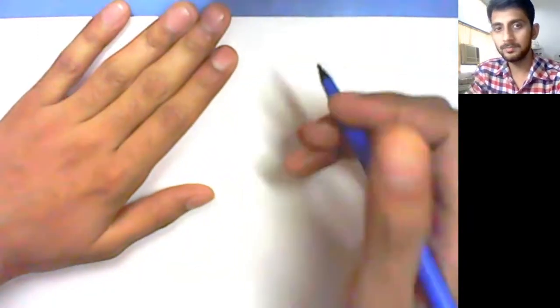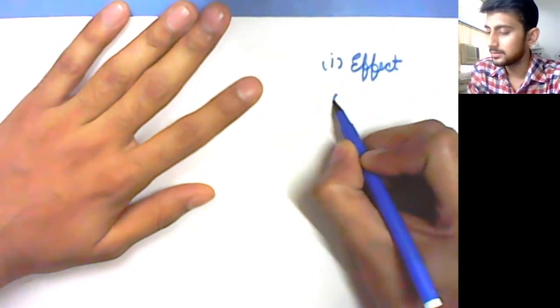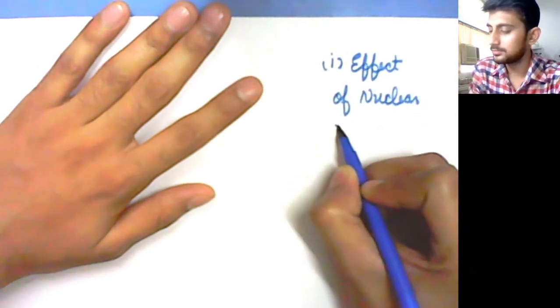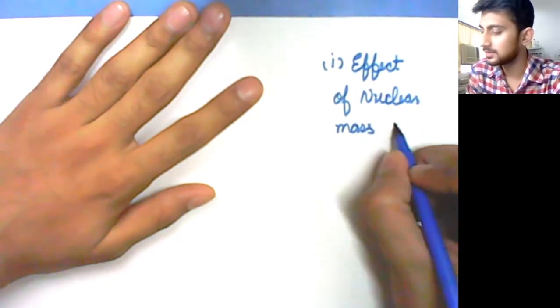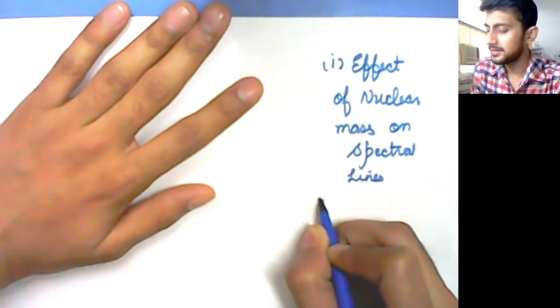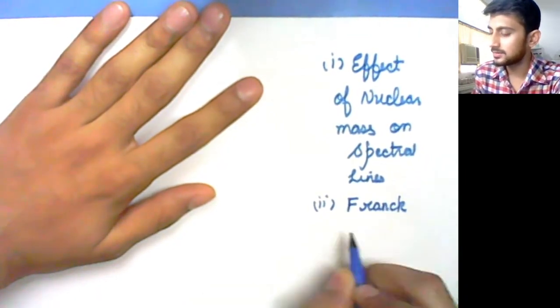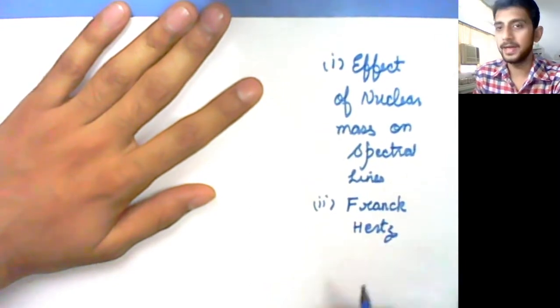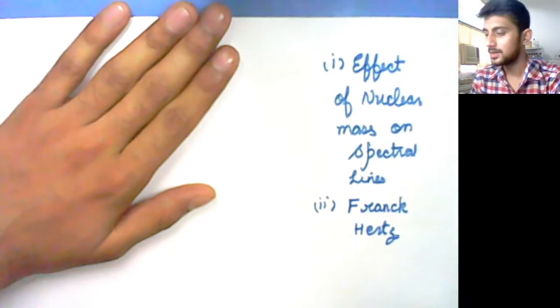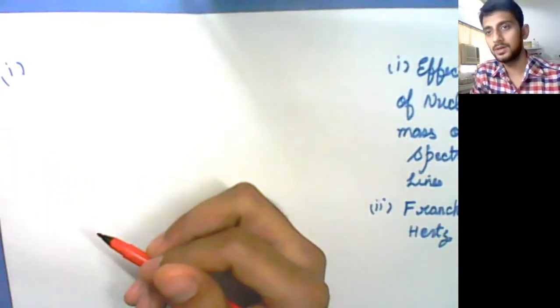A very good morning and welcome back. In order to finish our unit 3, we still have to complete a few topics. One is to understand the effect of nuclear mass on spectral lines, and another — which is going to be the last topic — is the Frank-Hertz experiment. In this module, I will first cover the effect of nuclear mass on the spectral lines.